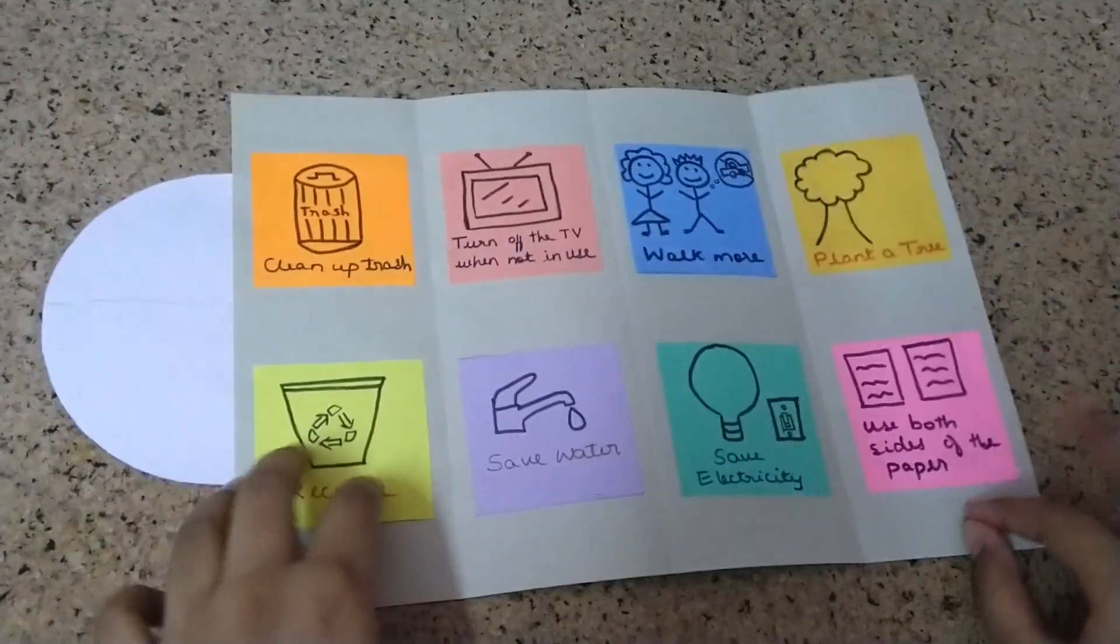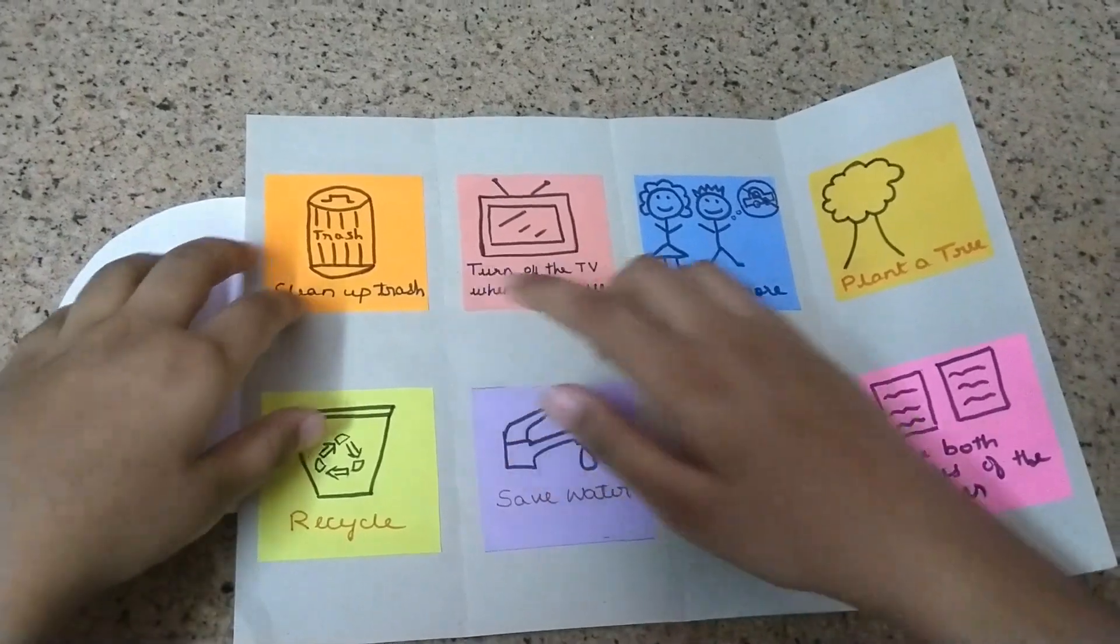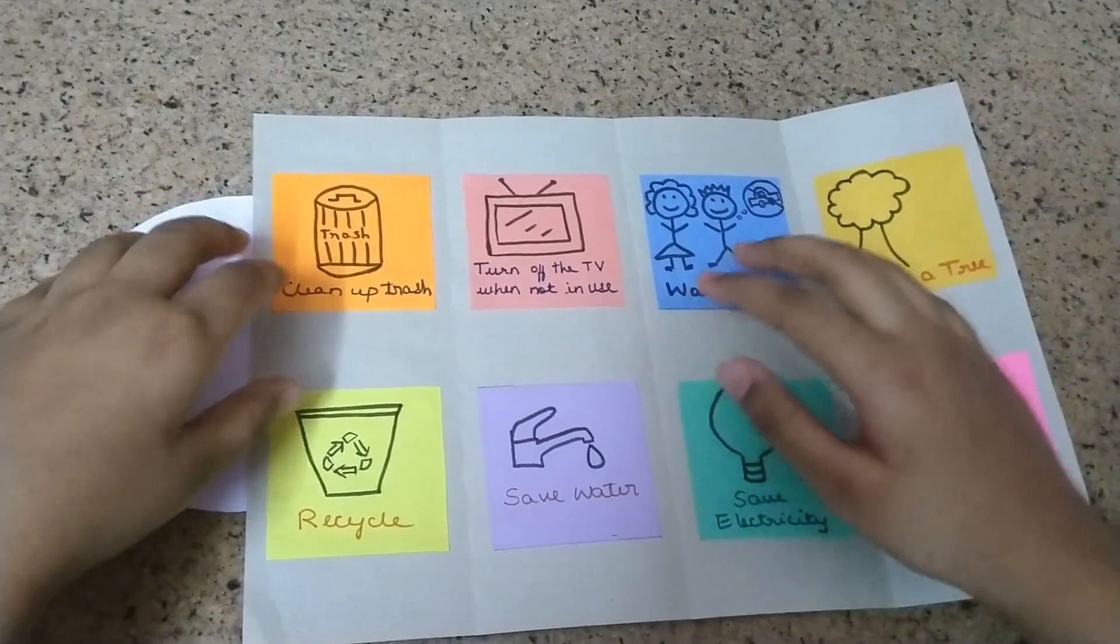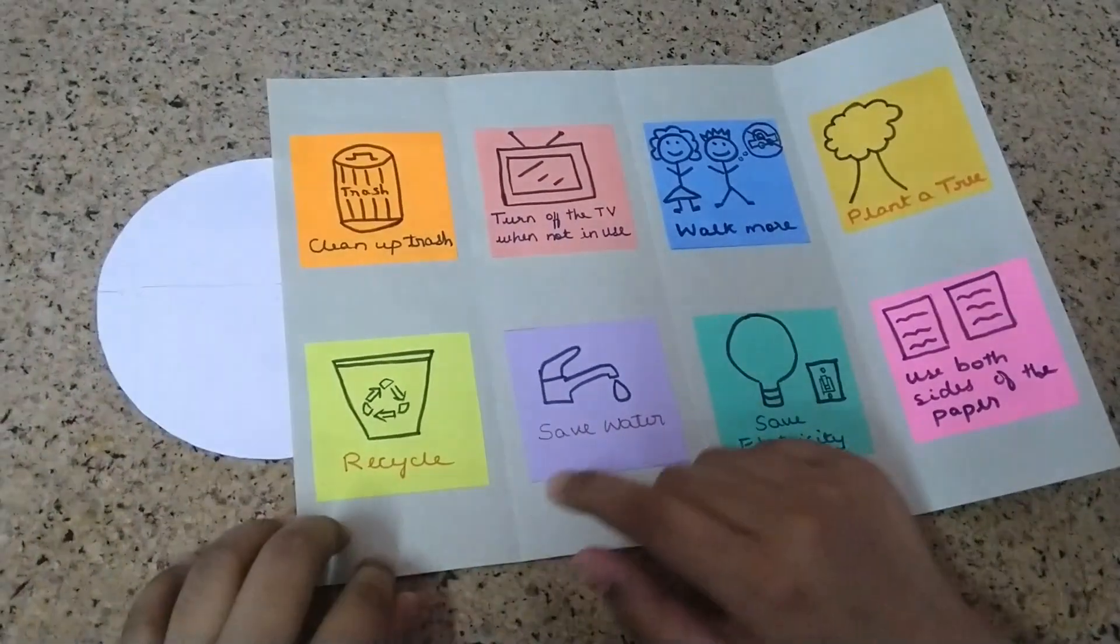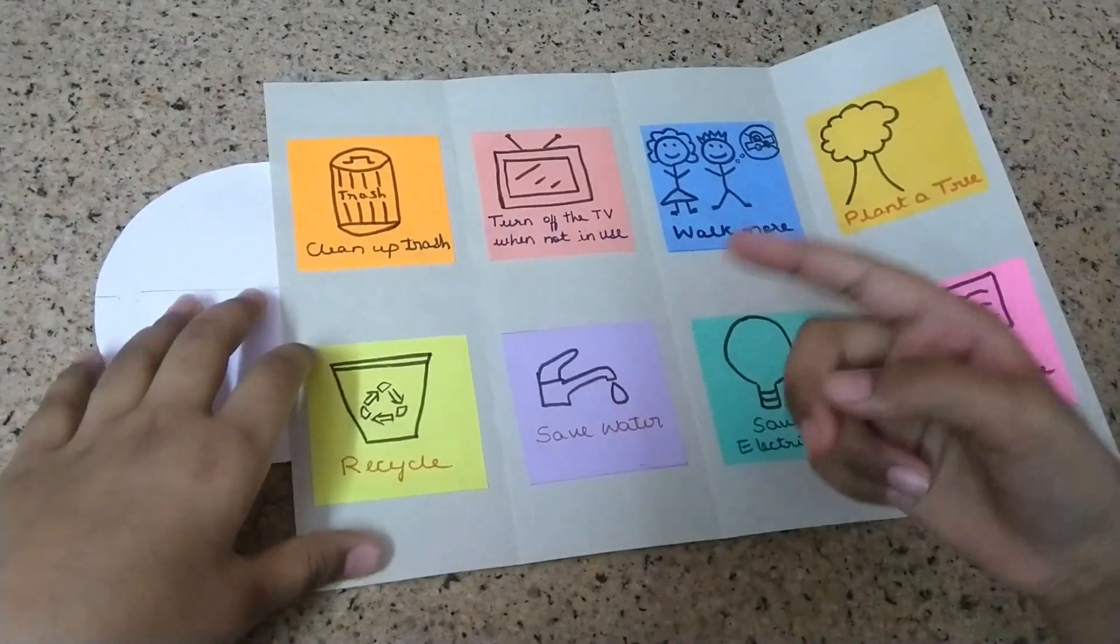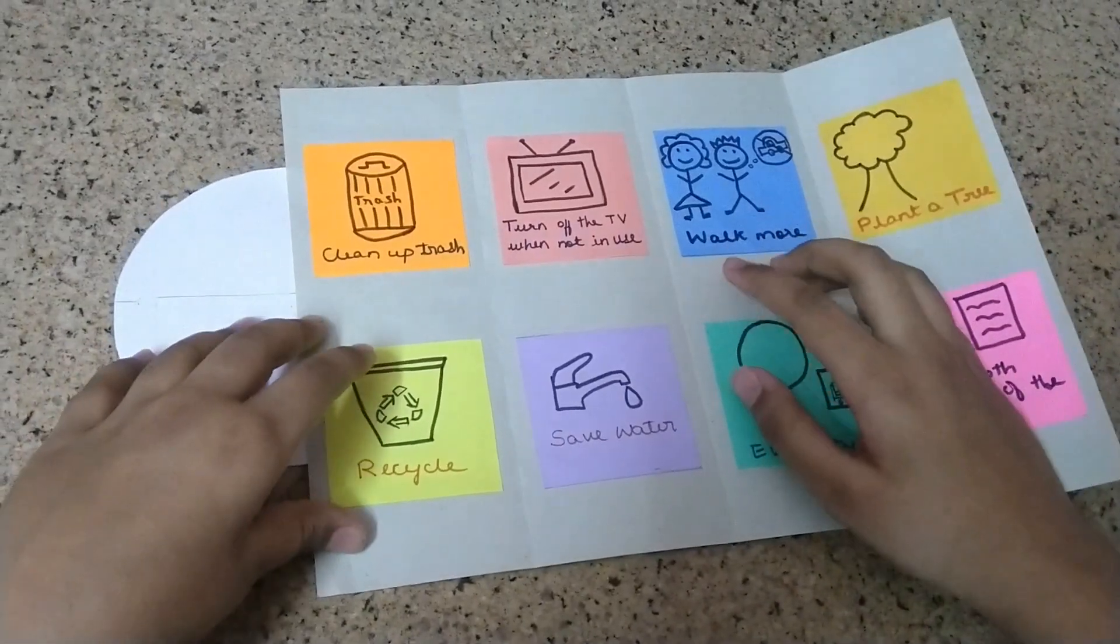The first point is clean up trash. We can keep our surroundings clean by removing the trash. The second point is recycle. We should recycle plastic, glass, metal, and paper. We should also reuse clothes, bags, books, and containers.